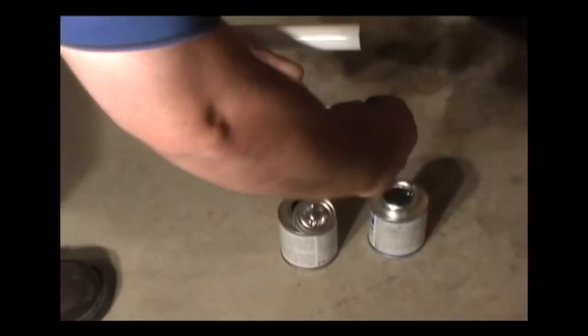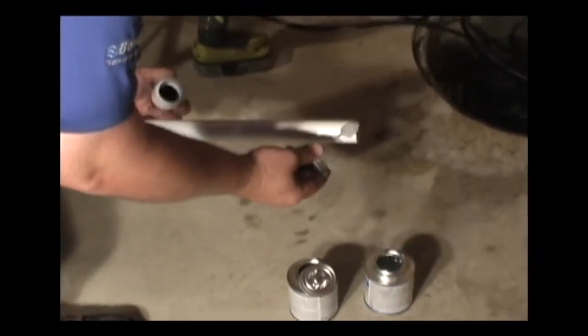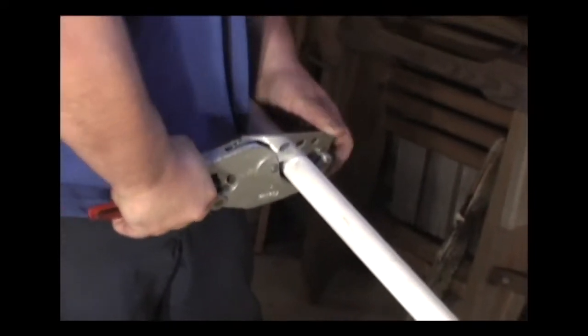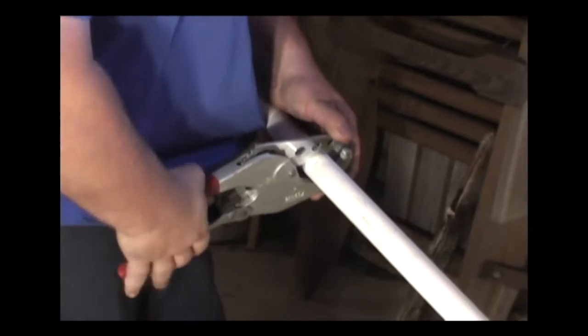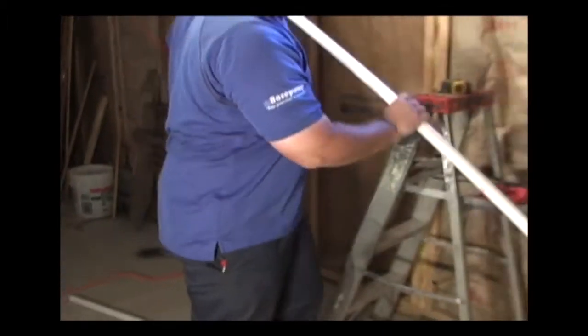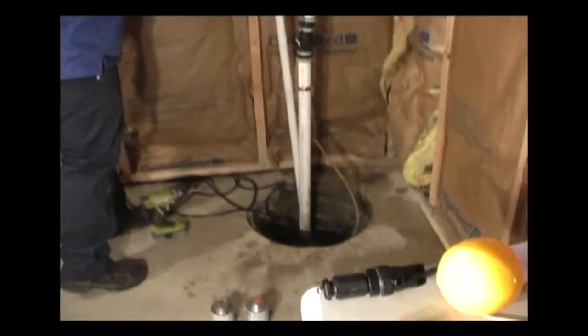The suction screen with its female adapter is cemented to one end of a length of PVC pipe. The pipe is measured and cut to fit according to the distance from the check valve on the base pump to where it will reach into the bottom of the sump. It is placed standing in the sump approximately in its final position and the final connections are made to the pump.